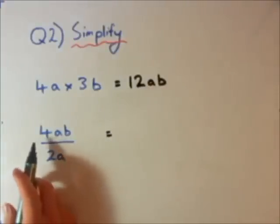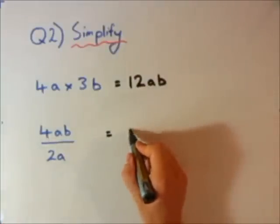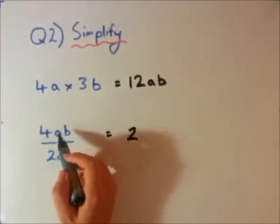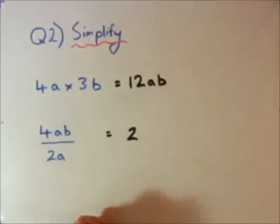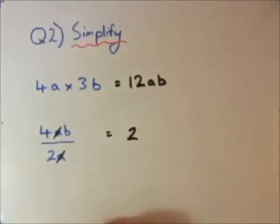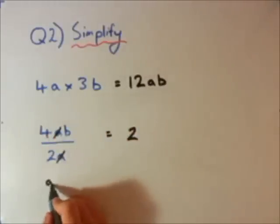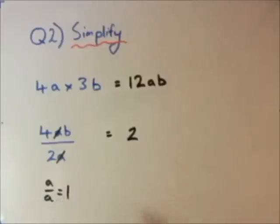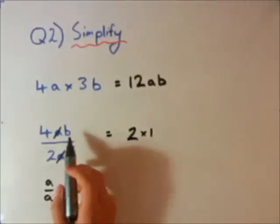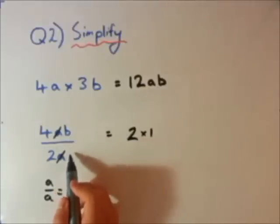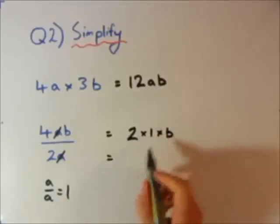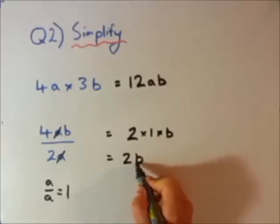Second one now, I'm going to divide the numbers first. 4 divided by 2 is 2. Now a divided by a, when you have anything divided by itself, you end up with 1. Another way you can look at it, if you have an a on the top and an a on the bottom, you can cancel it out. So a over a equals 1. Now b divided by, there's no b down the bottom here. So you're just going to be left with a b. So final answer, it's just going to be 2b.